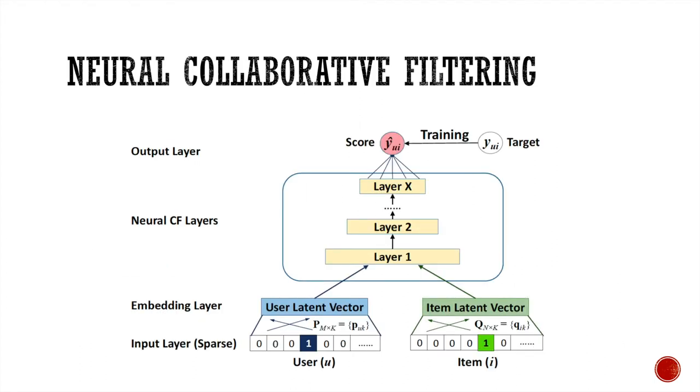So, the paper proposed a new neural net architecture called neural collaborative filtering. You can see that in the input layer, both the user and item are one-hot encoded. Then, they are projected onto the latent space with the embedding layer.